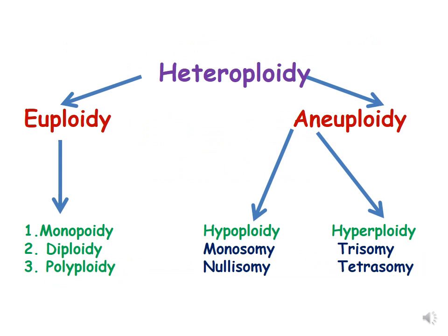Let us revise what we have already done in previous lectures of this topic. We have already discussed that heteroploidy is numerical changes in chromosomes, and it is of two types: euploidy and aneuploidy. Euploidy is when the numerical change represents an exact multiple of the haploid chromosome number. In aneuploidy, the chromosome number is not an exact multiple of the haploid chromosome number. Aneuploidy is of two types: hypoploidy, where chromosome numbers are less than the diploid counterpart, and hyperploidy, where chromosome numbers are more than the diploid counterpart.